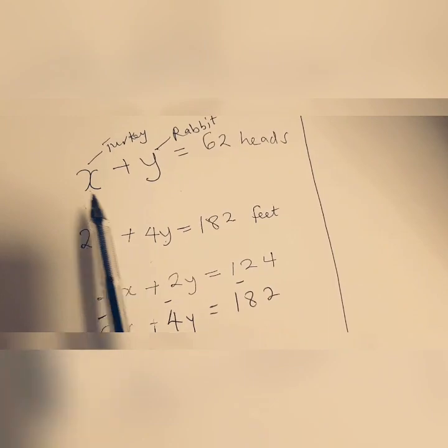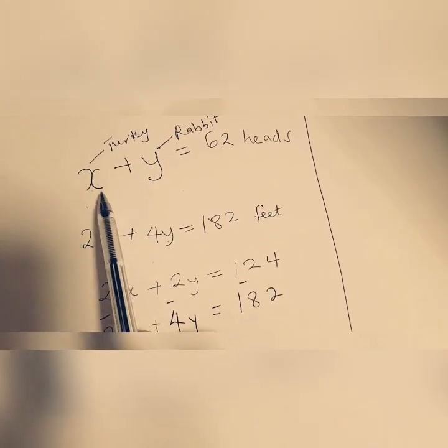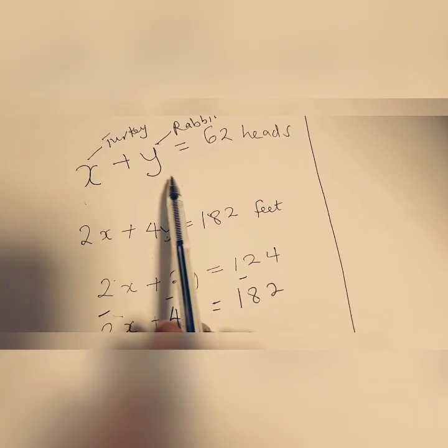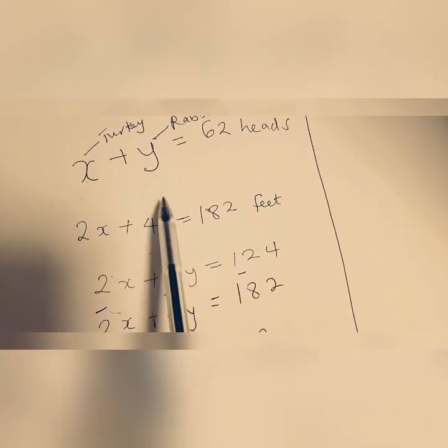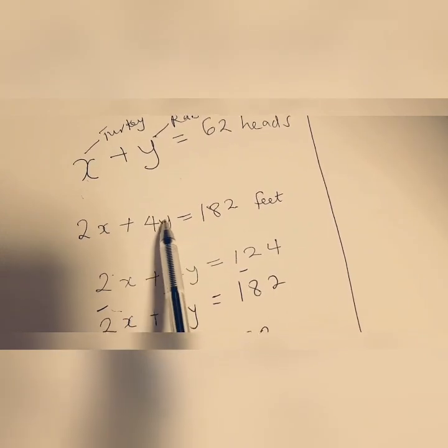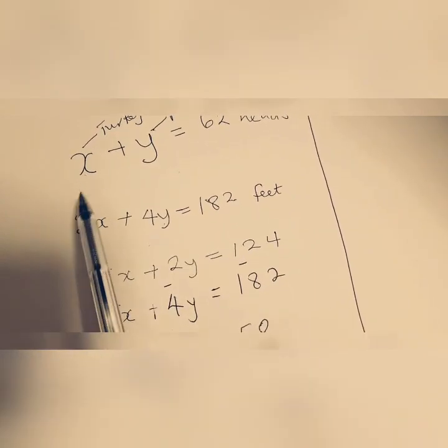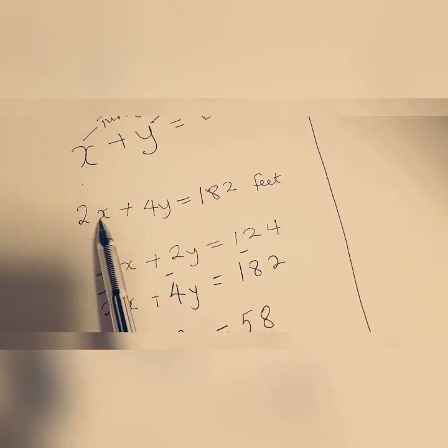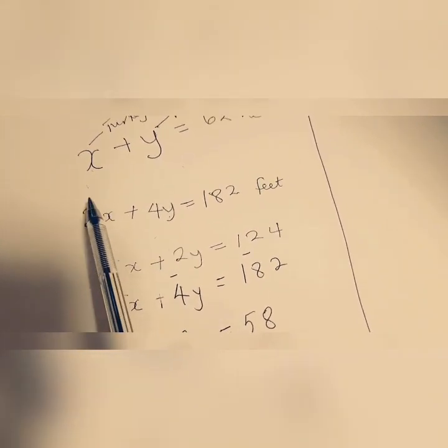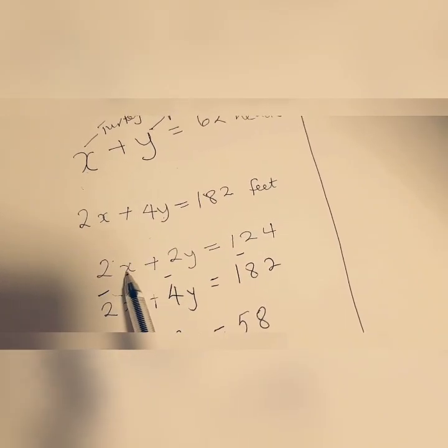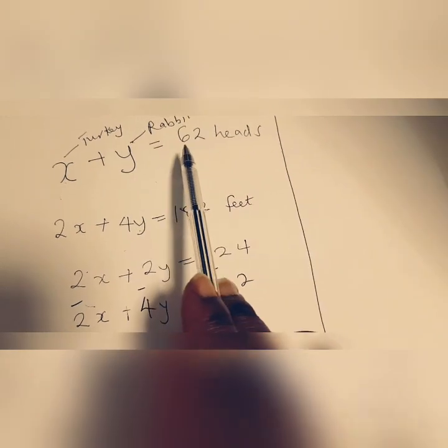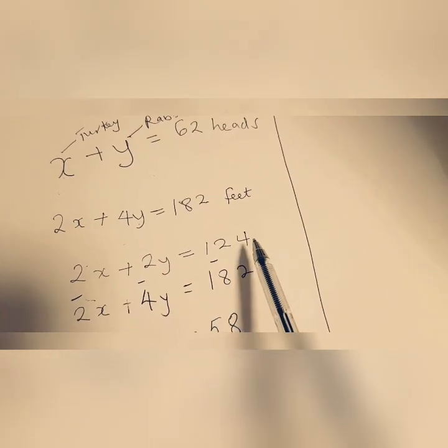But how do we do that? You want to make sure the x coefficient is the same as the x coefficient here, or you could make the y coefficient to be the same as you have it here. In this case we've made this x here to be the same coefficient as this 2x here. So 2 times x is 2x, 2 times y is 2y, and 2 times 62 is 124.